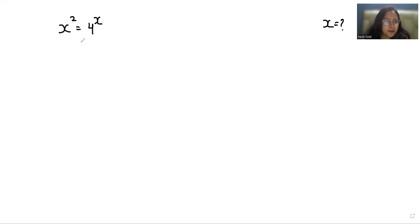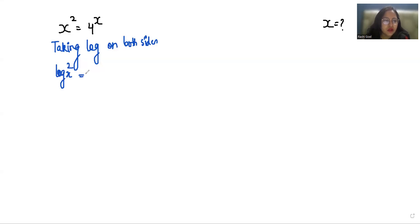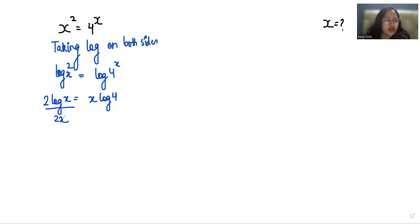I'm going to take log on both sides. So we can write this as log x squared equals log 4 to the power x. This becomes 2 log x equals x log 4. Now I'm going to divide both sides by 2x, so we can cancel out this 2 with 2 and this x with x. What is left is log x over x equals log 4 over 2.